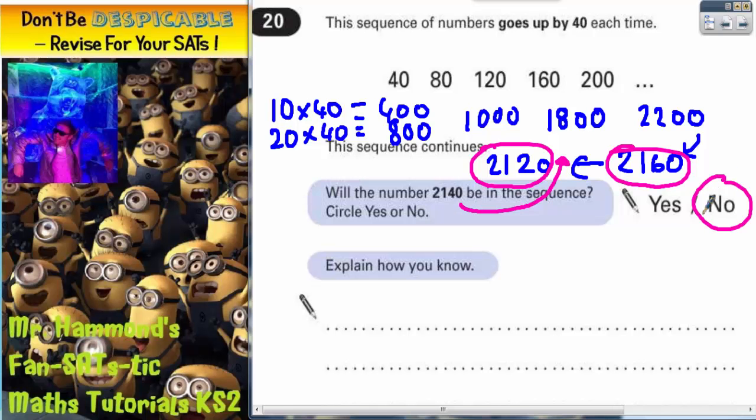Now, to explain it, we've got to talk about lots of 40. And we've got to say that 10 lots of 40 is 400, 20 lots of 40 is 800.